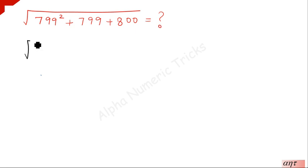So we rewrite this as √(799·799 + 799 + 800).